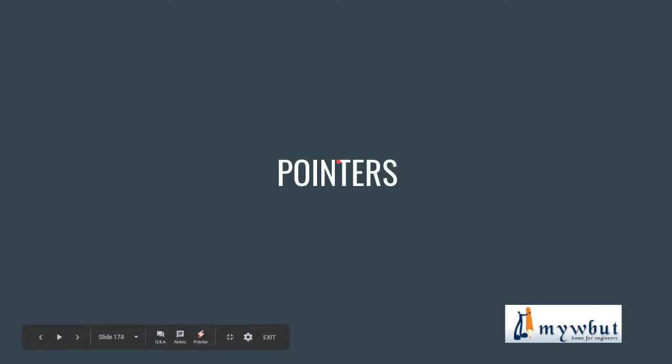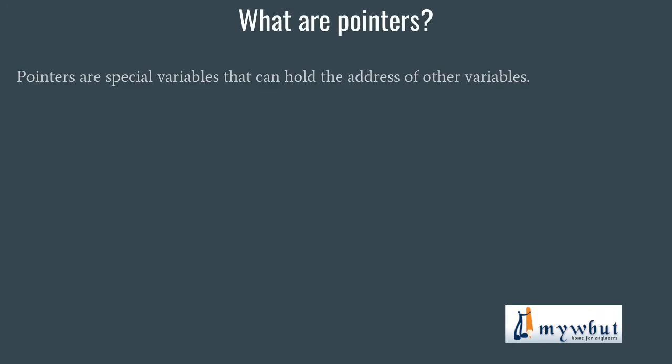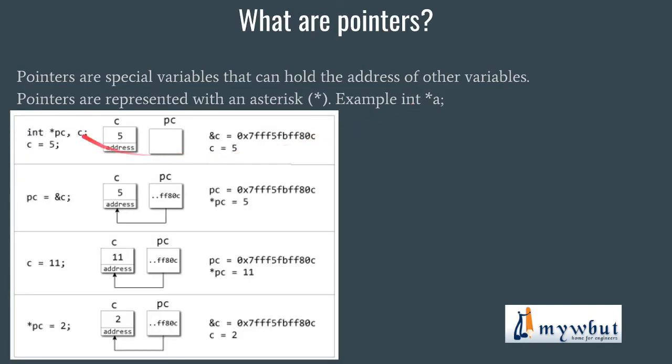Let's move on to understanding pointers. Pointers are special variables that can hold the address of other variables. If you have a variable like int a that stores some value, say five, this variable is stored at some location in memory. To get that address we use pointers. Pointers are represented with an asterisk — int star a — meaning that a is a pointer variable with data type int.